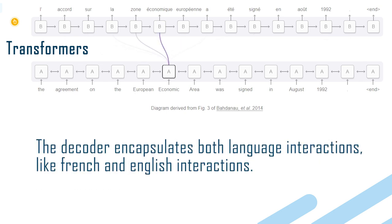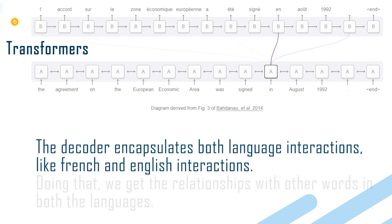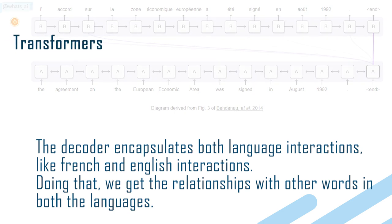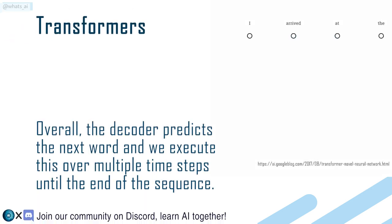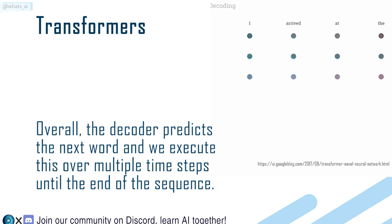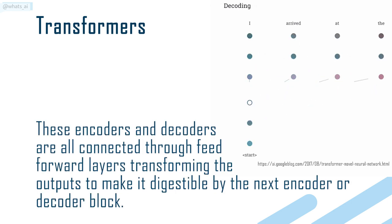The encoder encapsulates both language interactions, like French and English interactions. Doing that, we get the relationships with other words in both languages. Overall, the decoder predicts the next word and we execute this over multiple time steps until the end of the sequence. These encoders and decoders are all connected through feed-forward layers, transforming the output to make it digestible by the next encoder or decoder block.